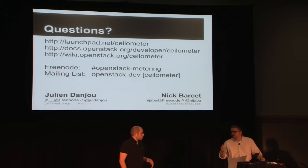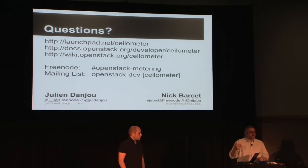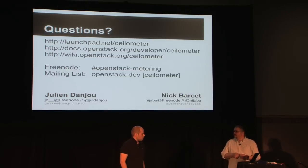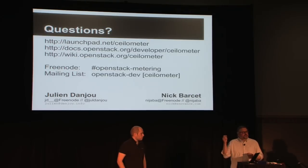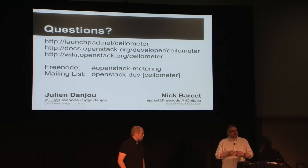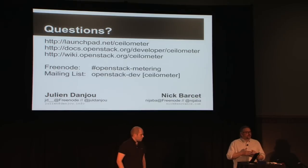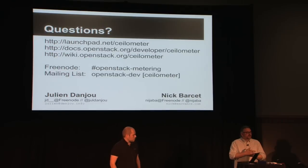Question: are we going to publish any recommendations on how to configure RabbitMQ to guarantee message delivery? Yes, we would. If we have this information, we can add it to the documentation. Also in Grizzly, there was some improvement on RabbitMQ high availability where you can now use what is available natively in Rabbit 3.0 and higher.